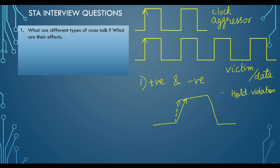Our estimation for hold calculation might be bad if there is crosstalk, while it will help setup. So positive crosstalk results in being good for setup but bad for hold. If there is negative crosstalk, it is just the other way round.